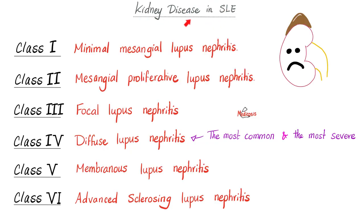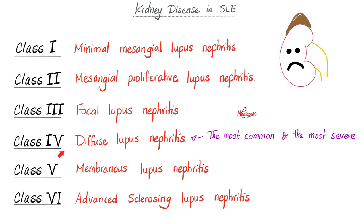Most patients with lupus have kidney disease. There are six classes: class one is minimal mesangial lupus nephritis; class two is mesangial proliferative lupus nephritis with hypercellularity; class three is focal lupus nephritis; class four is diffuse lupus nephritis — today's topic, which we call diffuse proliferative glomerulonephritis, and this is the most common and most severe form of lupus nephritis. Class five is membranous; class six is advanced sclerosing lupus nephritis.